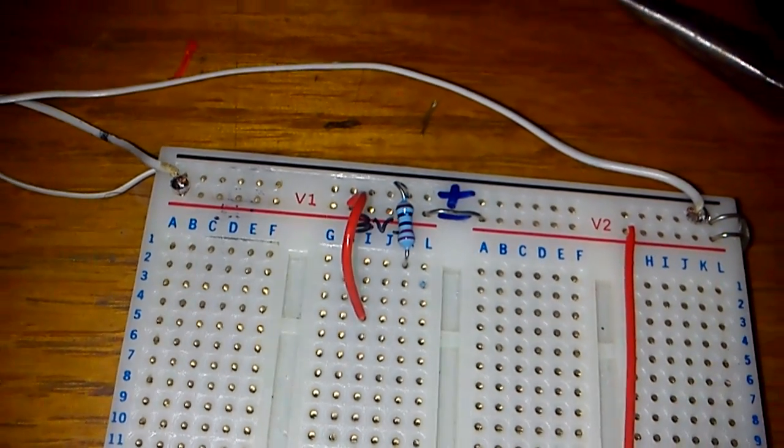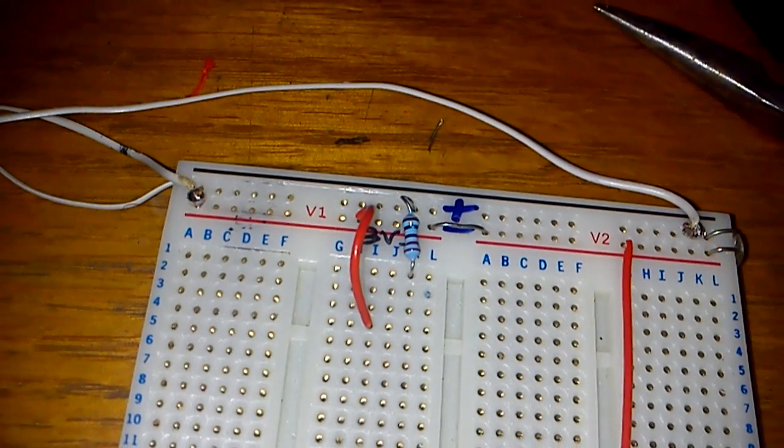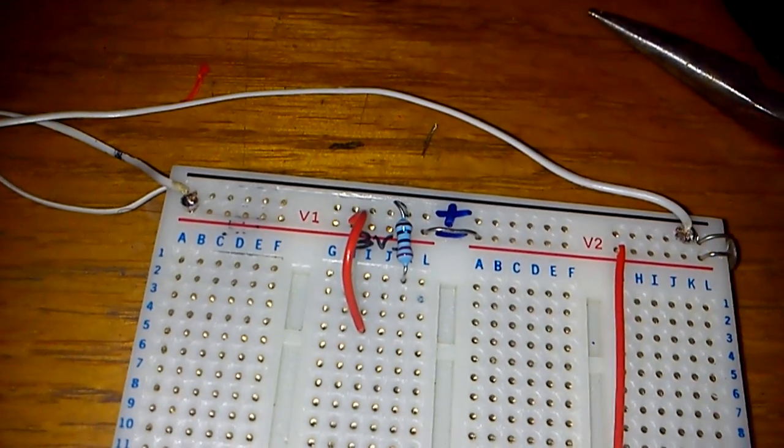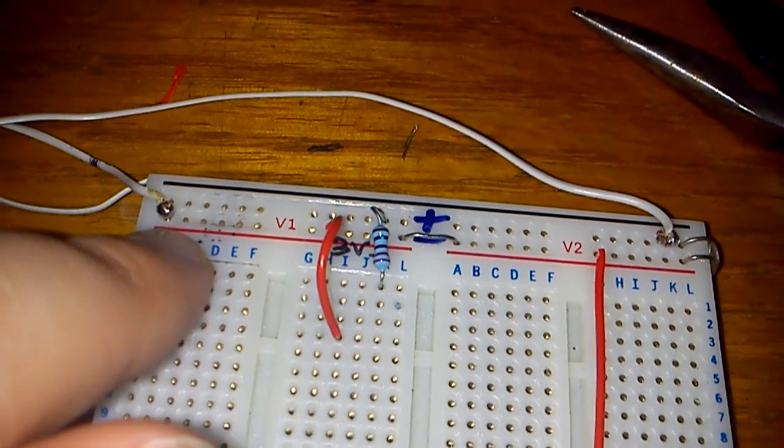Hi, so what I've done here is I've found the ground pin on the GPIO and I'm running it along this rail here.